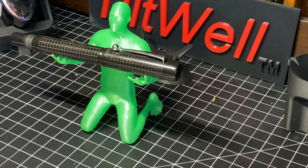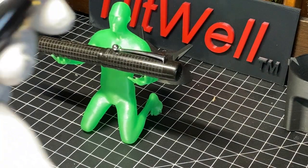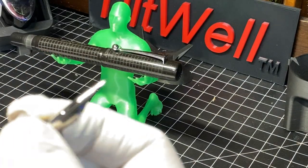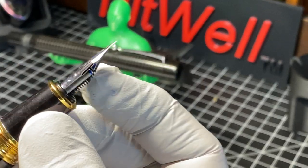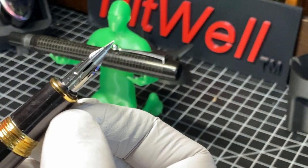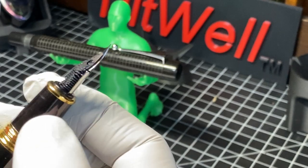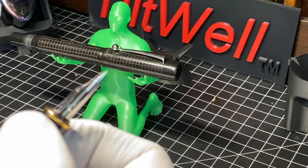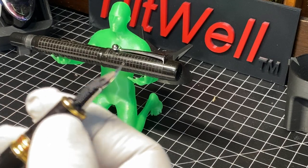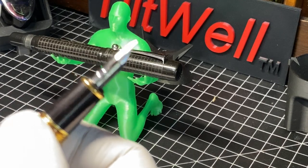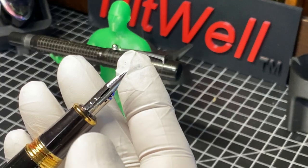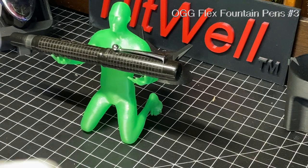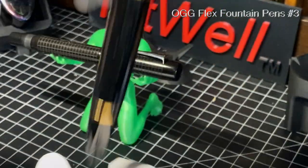I have some experience with those nibs. This is a Jinhao 159. I can scrape out the feed so it delivers more ink and then write on this. Although, this can sometimes be blobby, sometimes gets clogged, sometimes railroad. So, I was really happy with the amount of flex you could get out of it, but not much else. I did do a review of this pen, though. One of my first ones, I think.